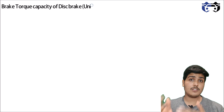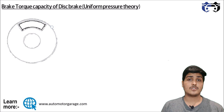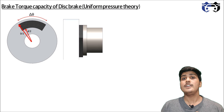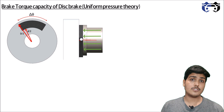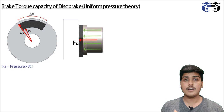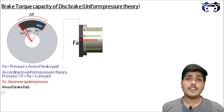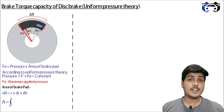First we will calculate the torque capacity using the uniform pressure theory, then move to the uniform wear theory. Here you can see the disc rotor and the brake pad. The inner radius of the brake pad is small d/2 and the outer radius is capital D/2. The angular width of the brake pad is delta theta. In the side view, the piston applies force on the brake pad, given by fa. fa equals pressure multiplied by the area of the brake pad.